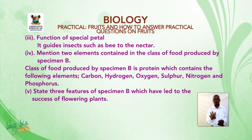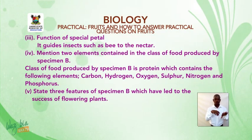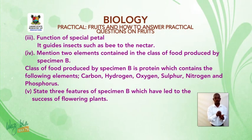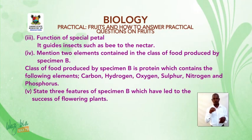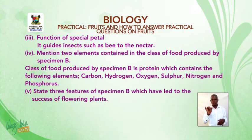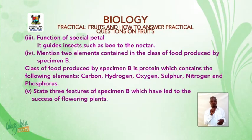Question B4: Mention two elements contained in the class of food produced by specimen B. Answer: The class of food produced by specimen B is protein, which contains the following elements: carbon, hydrogen, oxygen, sulfur, nitrogen, and phosphorus.